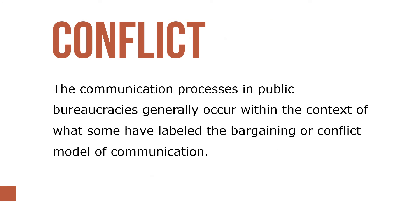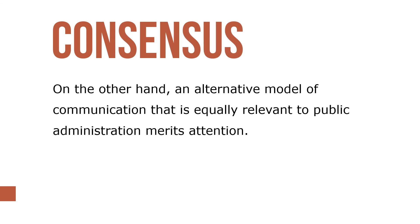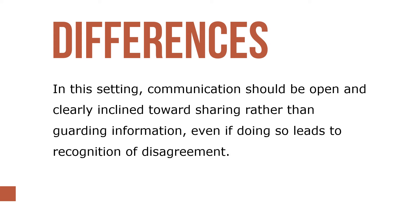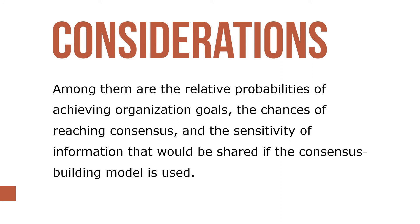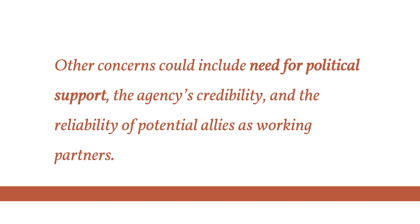The communication process in public bureaucracies generally occurs within the context of what some have labeled the bargaining or conflict model of communication. An alternative model — equally relevant to public administration — merits attention: communication should be open and clearly inclined towards sharing rather than guarding information, even if doing so leads to recognition of disagreements. Relevant considerations include the chances of reaching consensus, the sensitivity of information to be shared, the need for political support, the agency's credibility, and the reliability of potential allies as working partners.